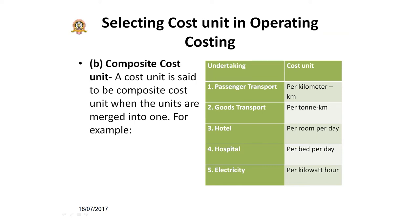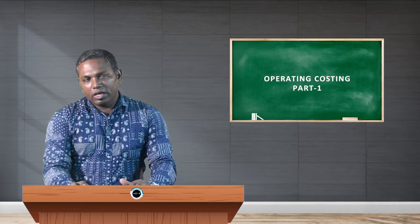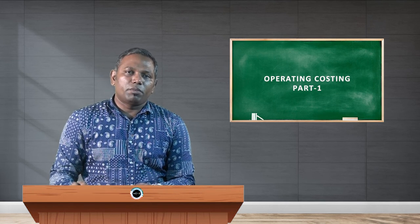In the case of a hotel, you calculate the cost per room per day, combining two things: room and day. You may also calculate the cost per bed per day. In the case of electricity, you calculate the cost per kilowatt per hour, again combining two units. When you combine two units together to calculate the cost, it is called a composite cost unit. Now let's move to analyzing the cost of operating services.